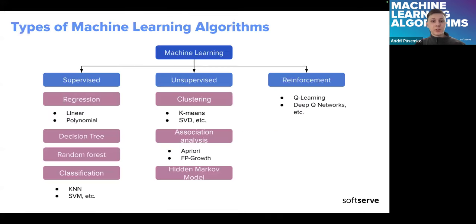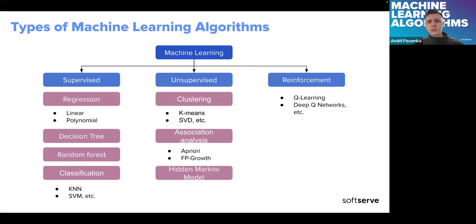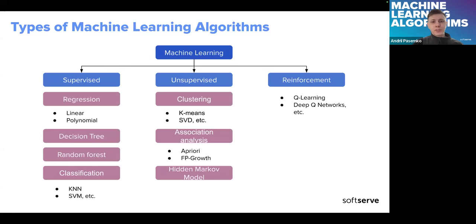Starting from this point, we could move to what types of machine learning algorithms there are. If you search through the internet, you could find up to 10 different machine learning algorithm types. But that's the subjective opinion of the author. If it were up to me, I would divide it into three big categories: supervised, unsupervised, and reinforcement learning.